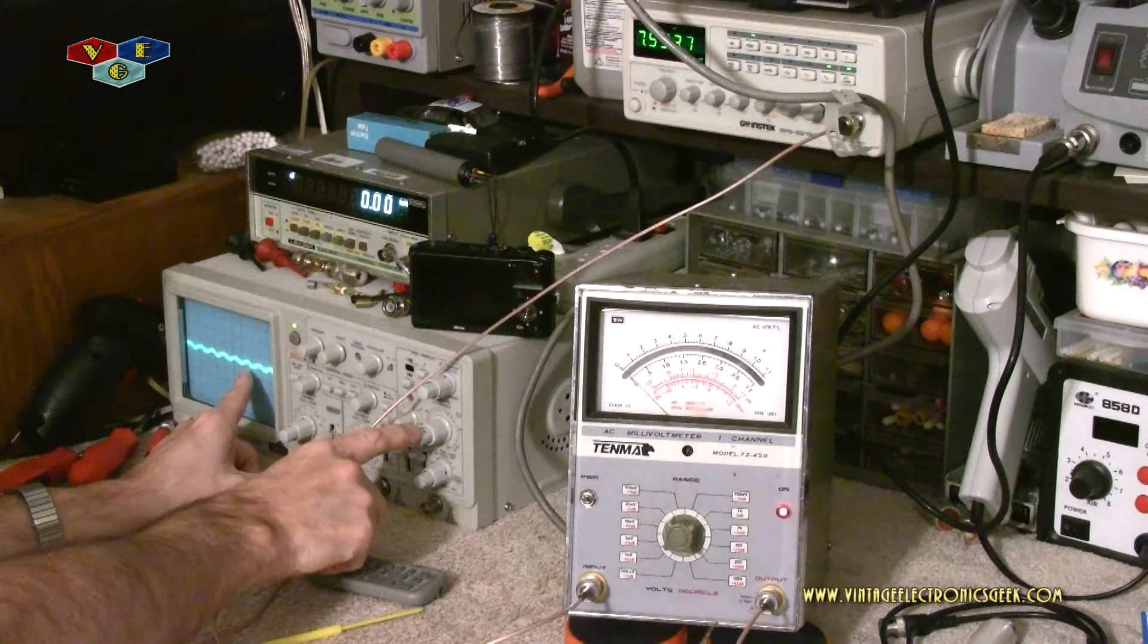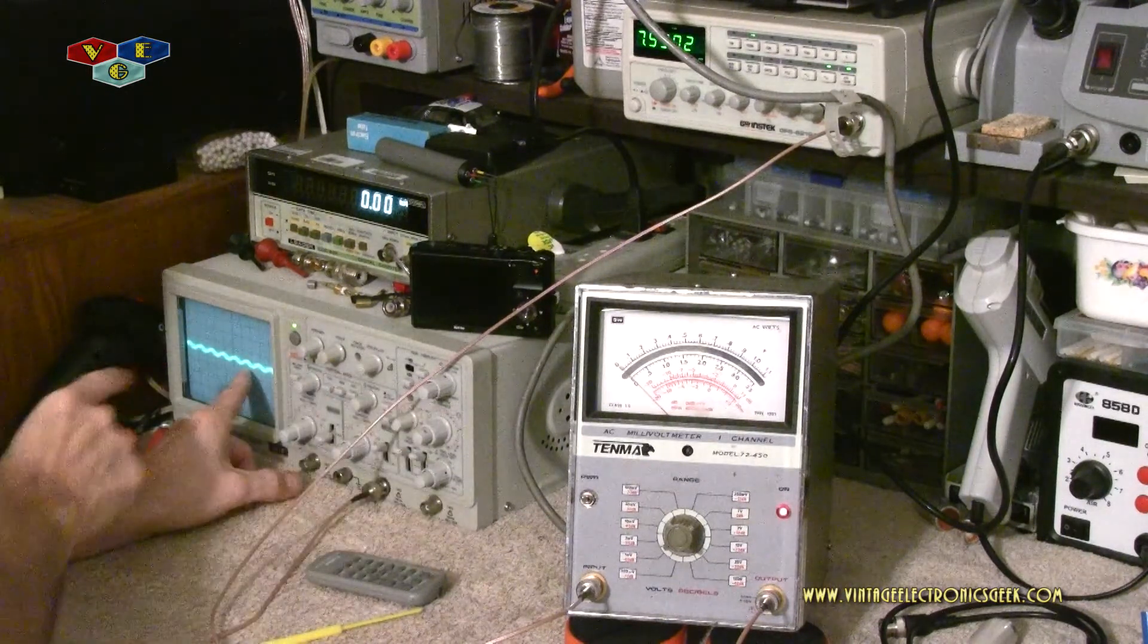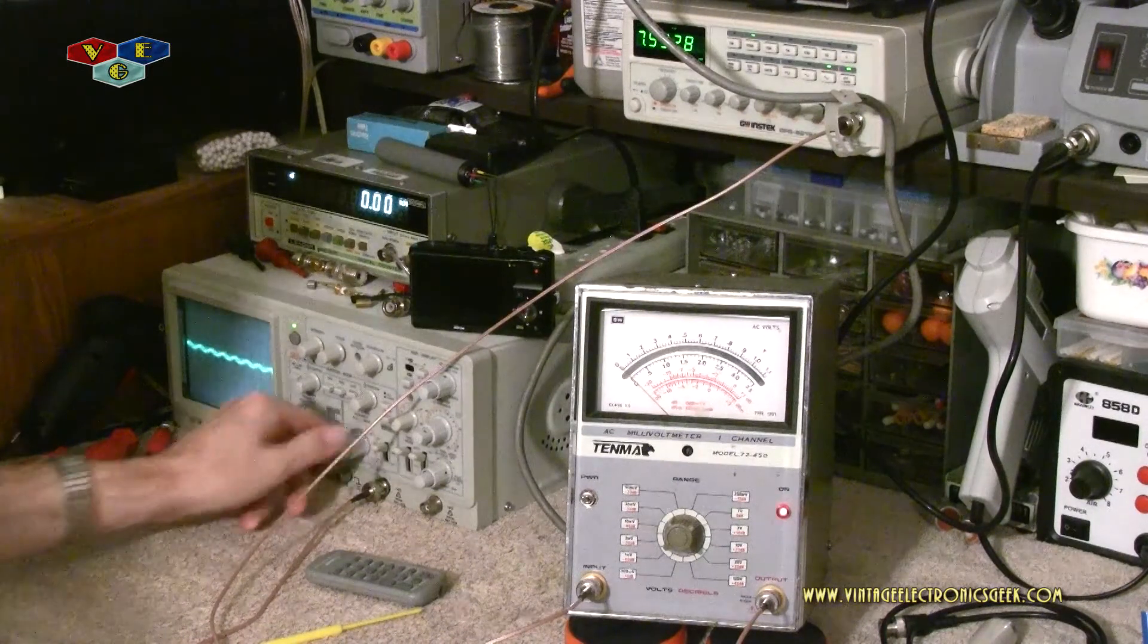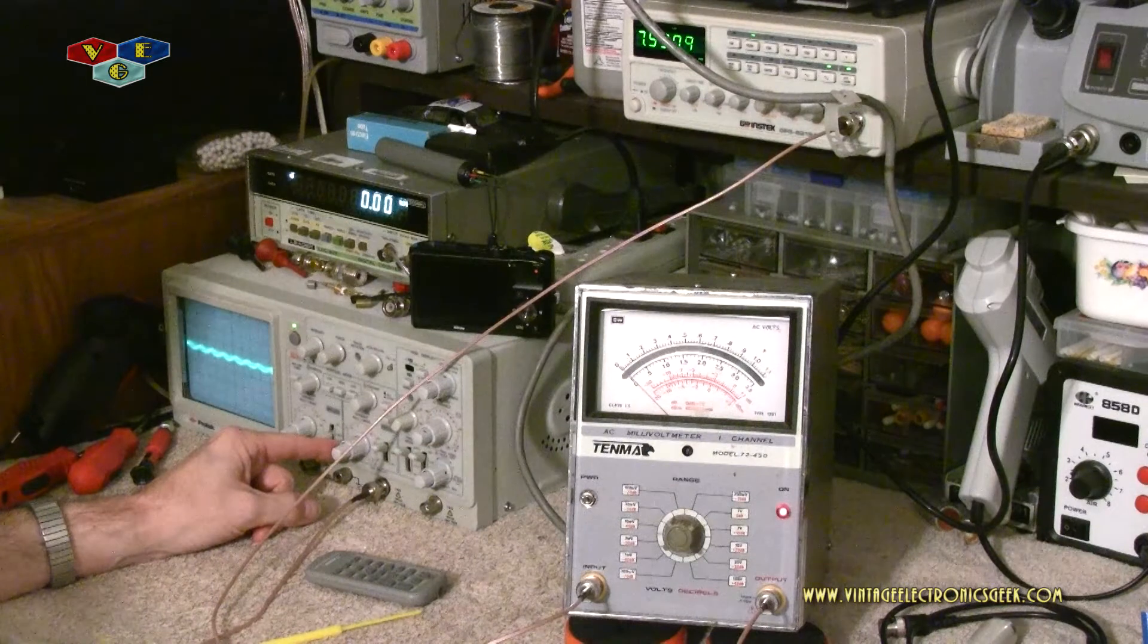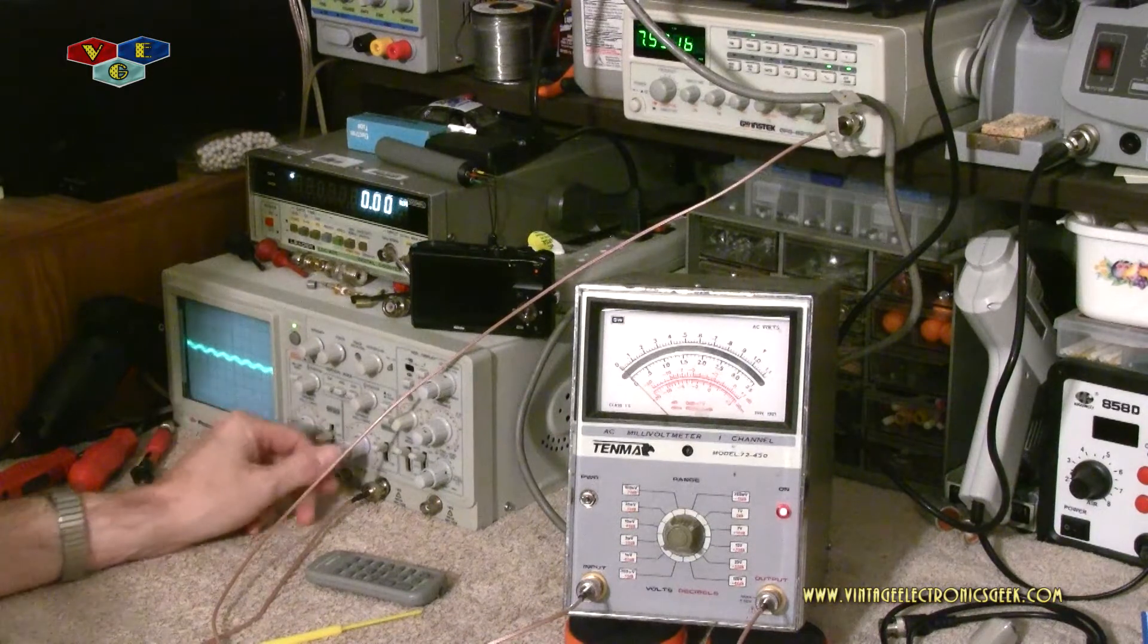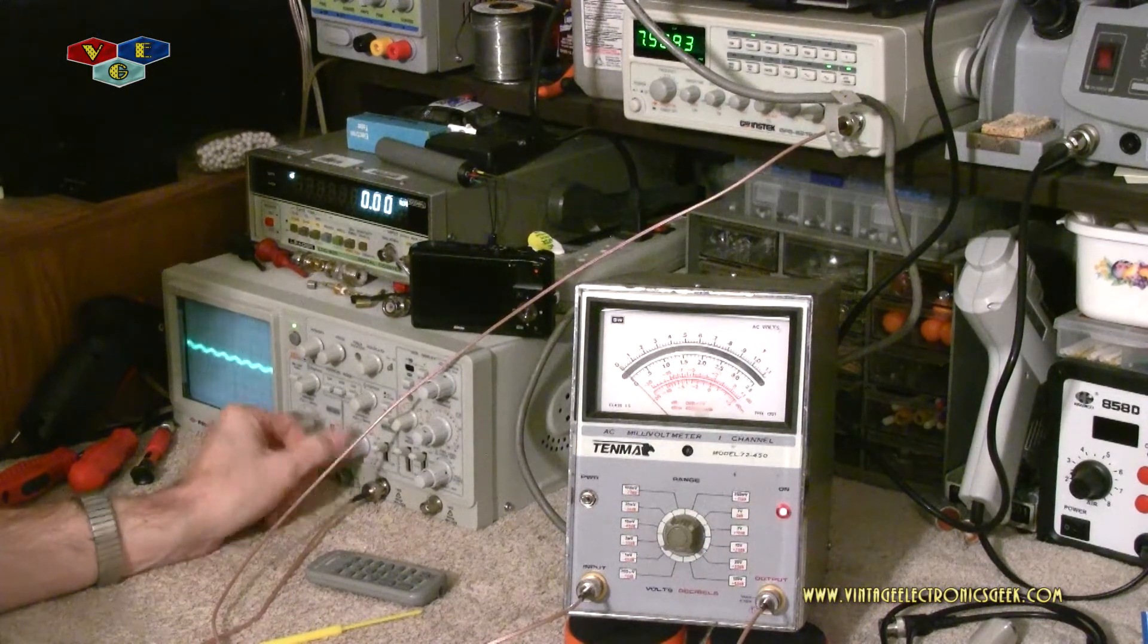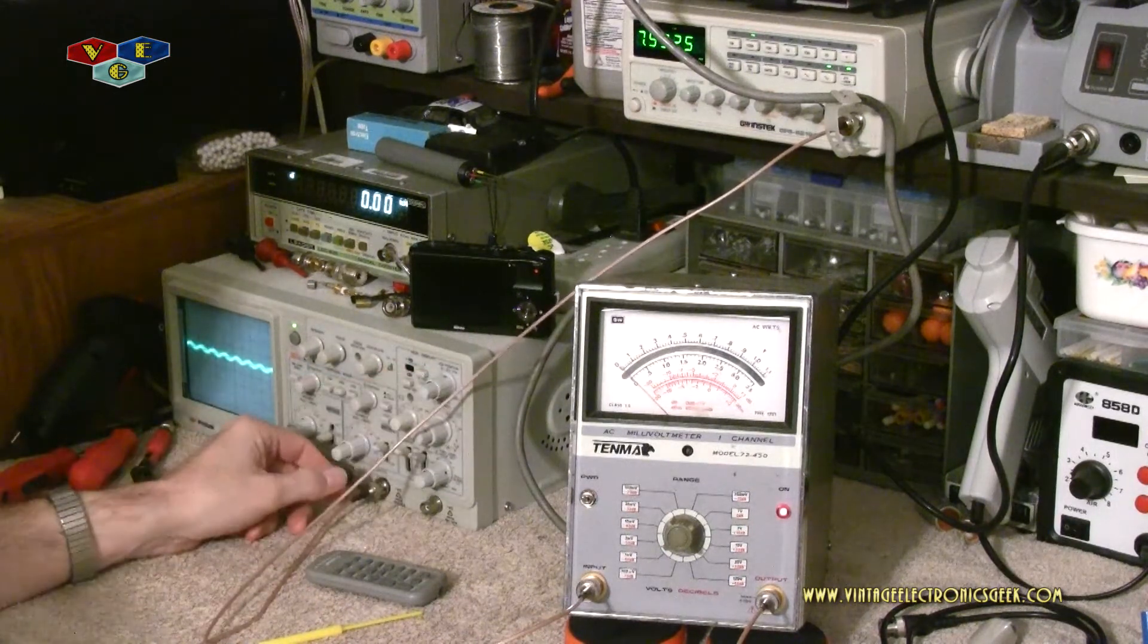I have the time per division set to one microsecond and then I have the volts per division set all the way as far as it will go down, at five millivolts per division. So that's as far as we got that going. I've got nothing else amplified to try to view it.